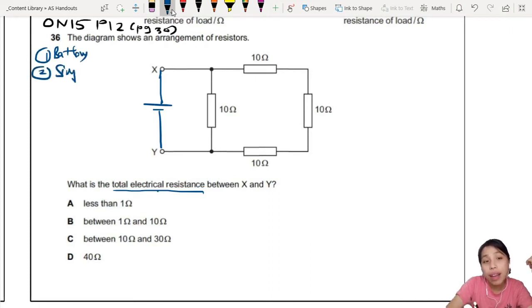The second tip is simplify in steps. What does that mean? Because you look at this diagram, you think is this parallel or series? I'll say both - it's parallel and also series. So what you can do is combine the series first, then parallel, then series, then parallel.